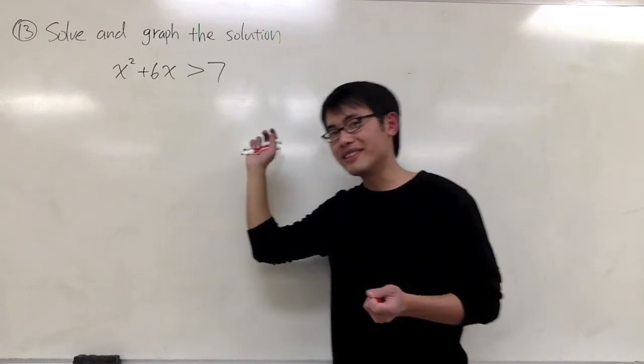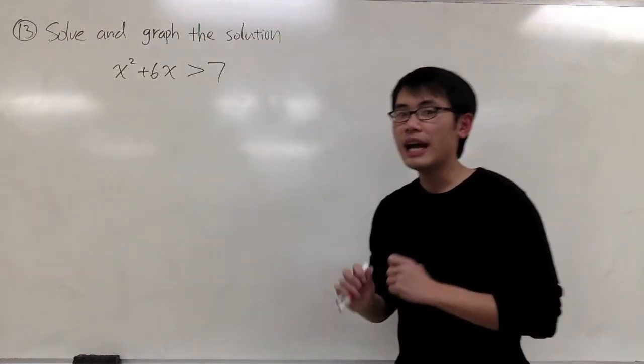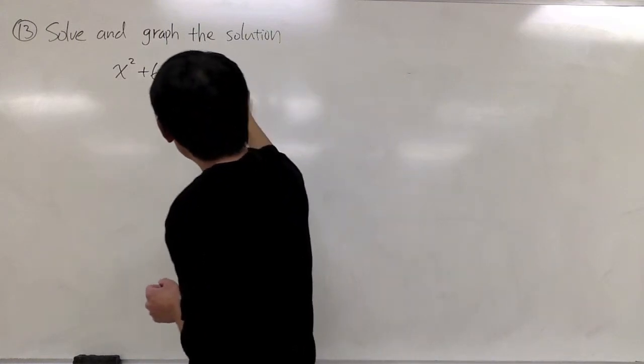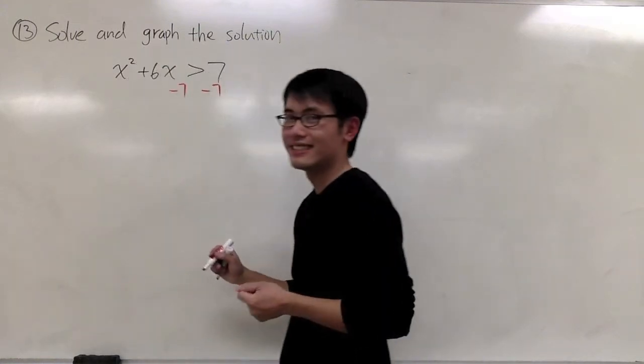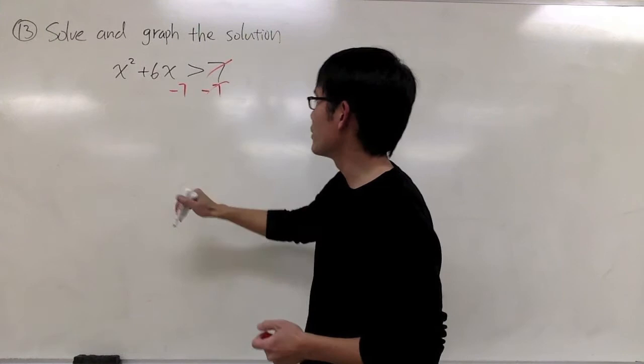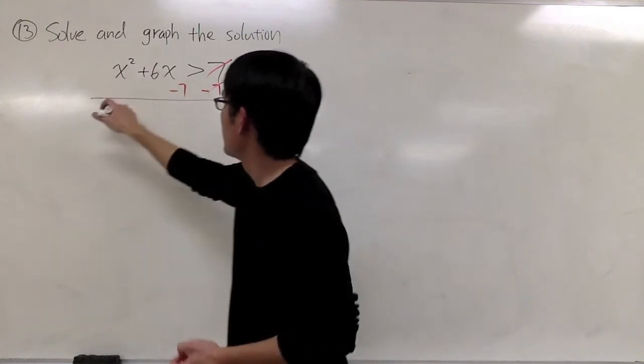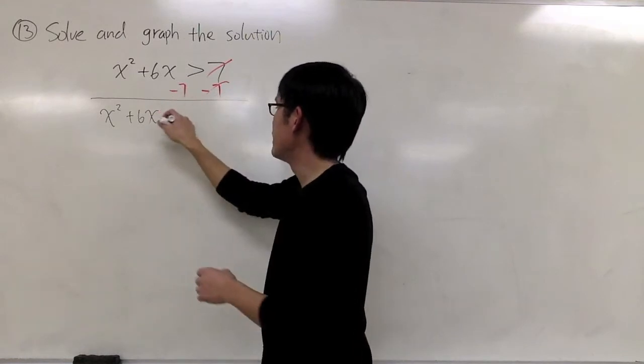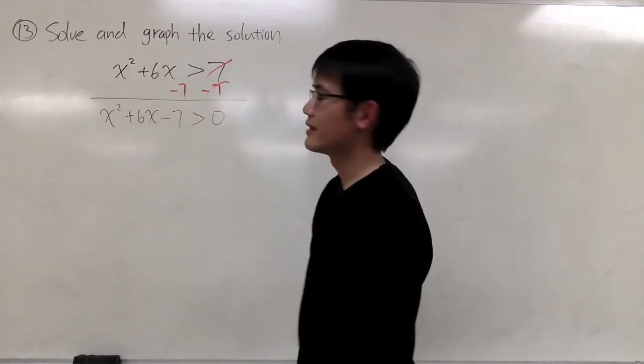This is a quadratic inequality. Just like a quadratic equation, let's first make one side equal to 0. We can easily do that by subtracting 7 from both sides. I will have x squared plus 6x minus 7 greater than 0.